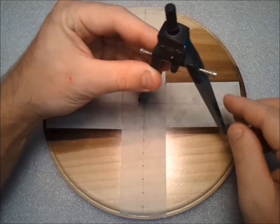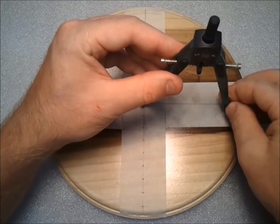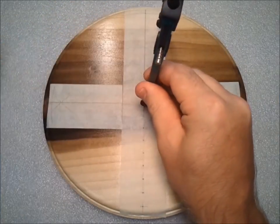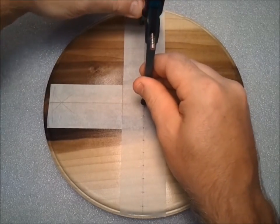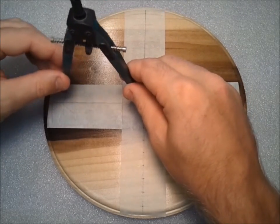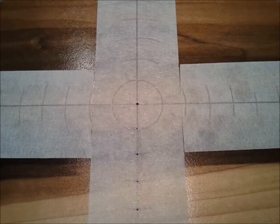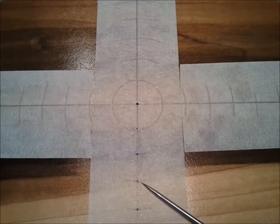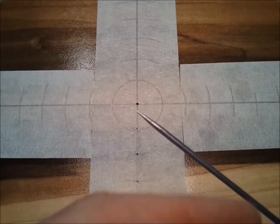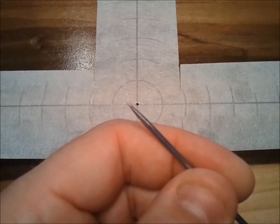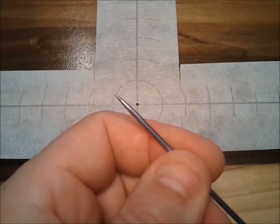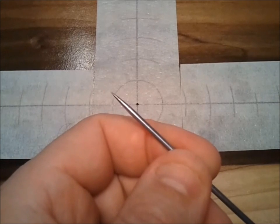Now use the compass to transfer the remaining points to the other three line segments. Once you've used your compass to transfer all the other points around, use a needle tool like this to mark through the masking tape so you know where to put your nails later. This is just a piece of coat hanger sharpened on the lathe.